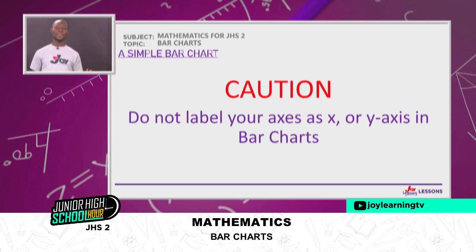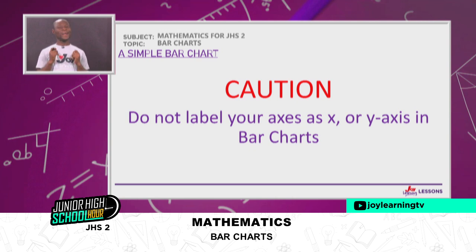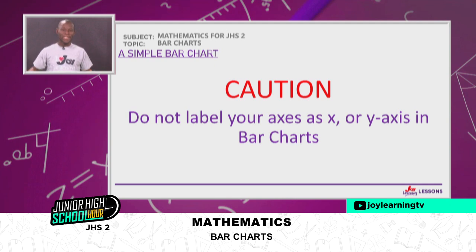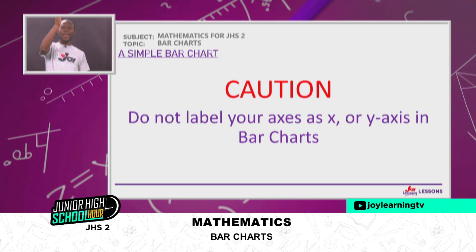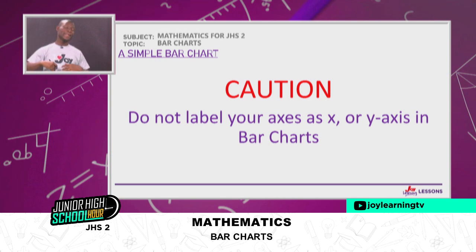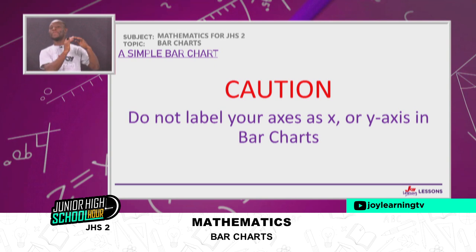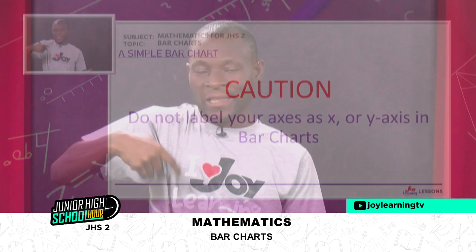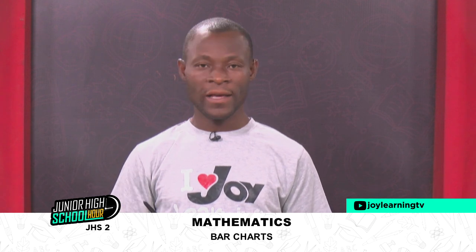This is a big caution: do not label your axes as X or Y in bar charts. You can easily be penalized for that. Don't draw a vertical axis and label it Y-axis, and don't draw a horizontal axis and label it X-axis. The vertical axis is the frequency axis — number of students, number of candidates, or number of pupils depending on context. The horizontal axis is labeled by the type of data.